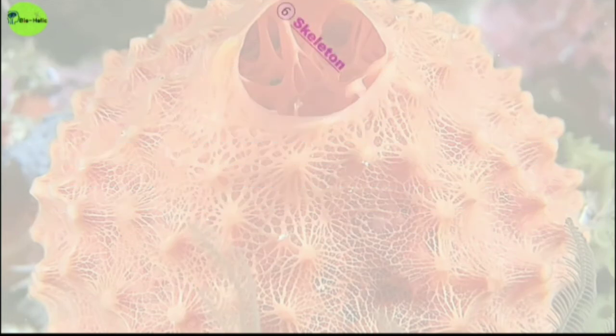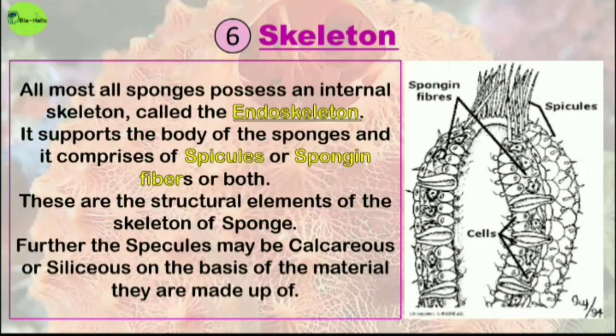The last characteristic is the skeleton. Almost all sponges possess an internal skeleton known as an endoskeleton. It supports the body of the sponge and comprises spicules, spongin fibers, or both. The spicules may be calcareous — made up of calcium — or siliceous — made up of silicon. You can see the structural elements of the sponge skeleton in this image.